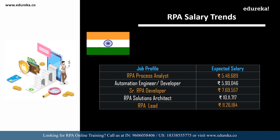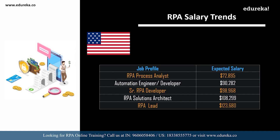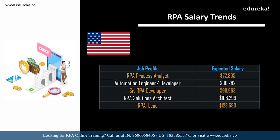In the USA, an RPA process analyst can expect around 72,000 dollars; an automation engineer or developer around 90,000 dollars; a senior RPA developer around 98,000 dollars; an RPA solutions architect around 100,000 dollars; and an RPA lead around 123,000 dollars. This is a huge amount of money, so if you're looking to become an RPA developer, now is the right time to start your career in RPA.